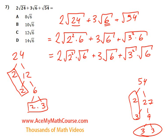Now we can start cancelling things out. The square root of 2 squared, I can cancel out the square with the root. And I get 2 times 2 times the root of 6. 2 times 2 is 4. So I get 4 root 6. Plus 3 root 6. And then over here, the square root of 3 squared is just 3. So we get 3 times the square root of 6. Just like over here, of course.